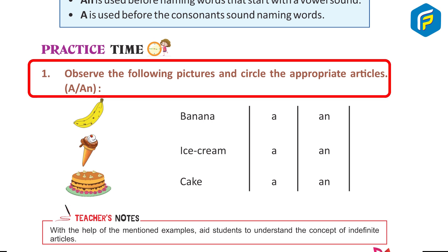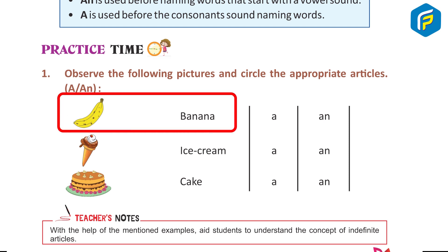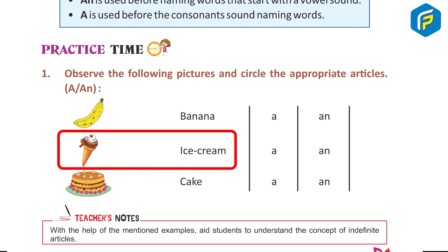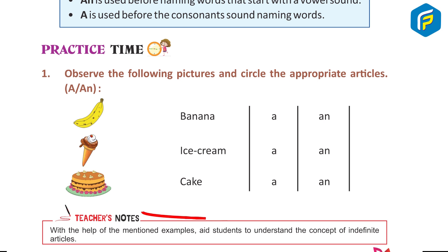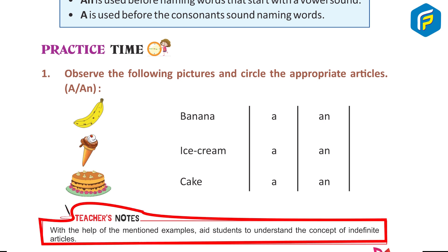Banana — answer: a. Ice cream — answer: an. Cake — answer: a. Teacher's Note: With the help of the mentioned examples, aid students to understand the concept of the identified articles.